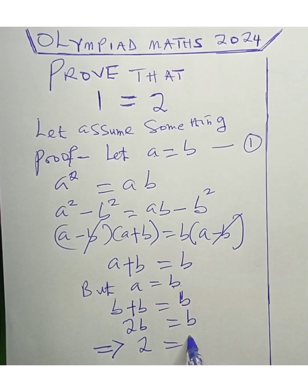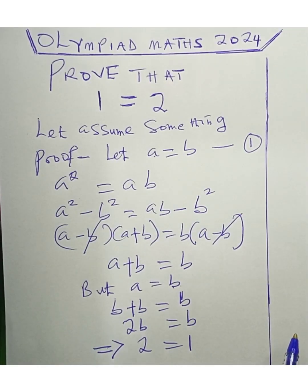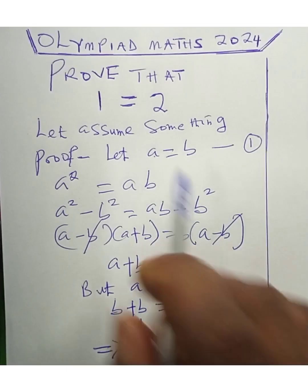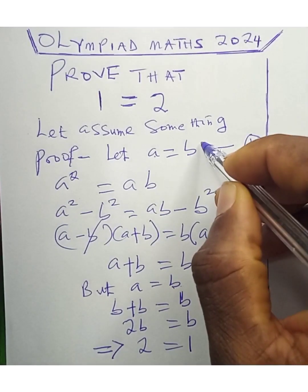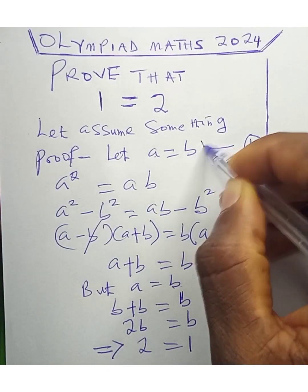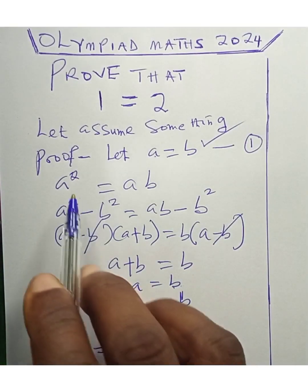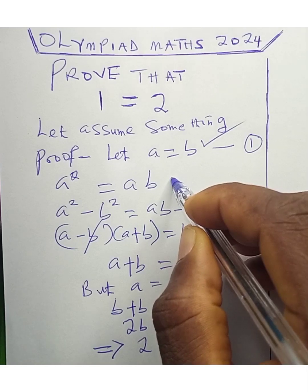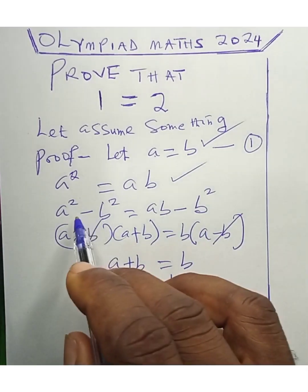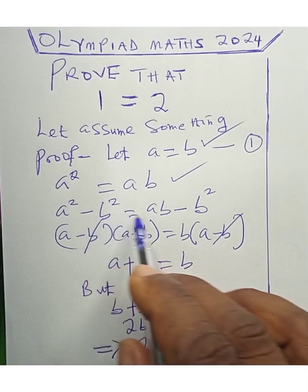This implies that 2 equals 1. But at this point — where did we go wrong? We assumed a equals b, which is correct. Then a squared equals ab is correct. We subtracted both sides by b squared — also correct. But then we divided both sides by (a minus b).